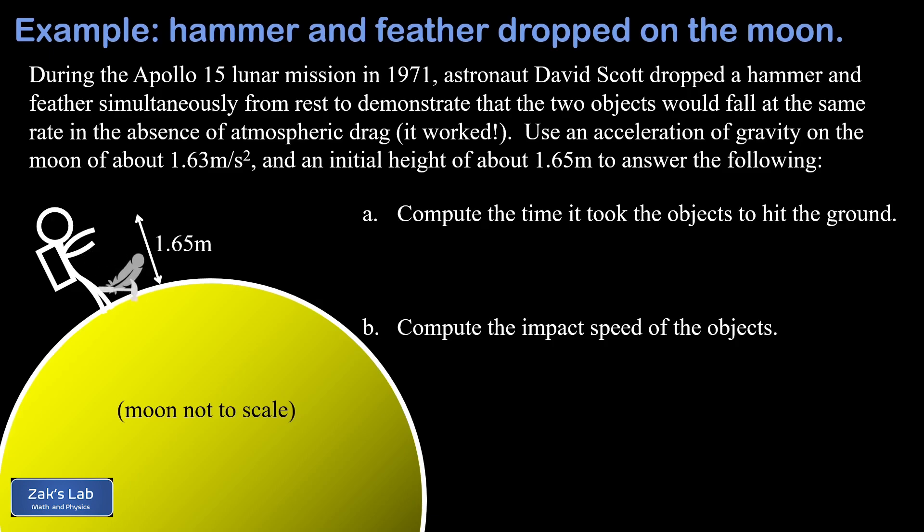As we can see, the experiment worked out. In this problem, we're going to investigate the free-fall kinematics that was going on in this experiment by computing the time it took these two objects to hit the ground and then the impact speed for the objects. We're going to use an initial height of 1.65 meters above the surface of the moon and an approximate acceleration of gravity of 1.63 meters per second squared.